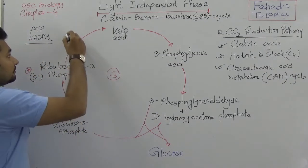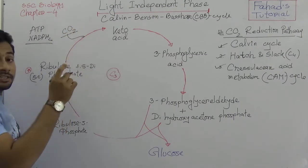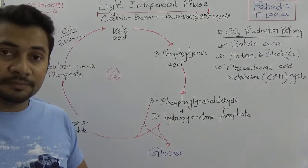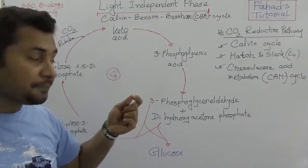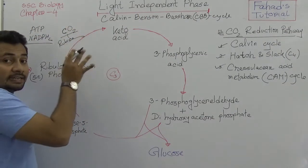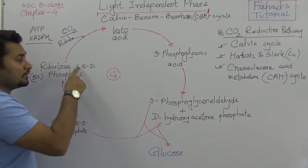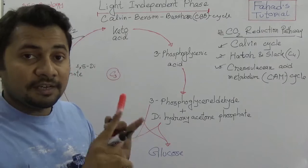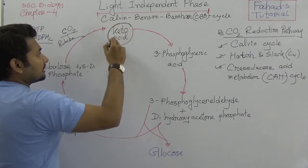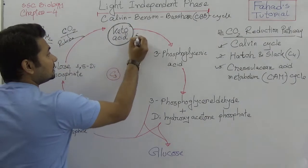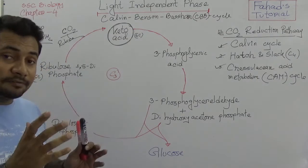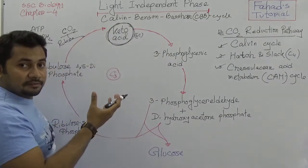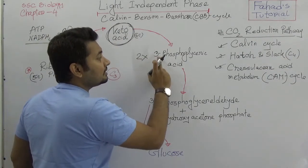One carbon dioxide molecule from the environment is added through the enzyme Rubisco. This enzyme helps absorb carbon dioxide from the atmosphere. So 1 molecule of CO2 is added to the 5-carbon ribulose-1,5-diphosphate. When this 1-carbon molecule is added to the 5-carbon molecule, a first temporary compound — ketoacid — is produced, which is a 6-carbon compound and is extremely temporary. It immediately breaks down into 2 molecules of 3-phosphoglyceric acid.